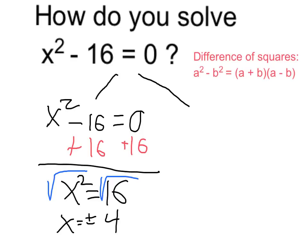So in this case, this is just x squared minus 4 squared. So we know that that can be written as x plus 4 times x minus 4, and all of that is equal to 0.